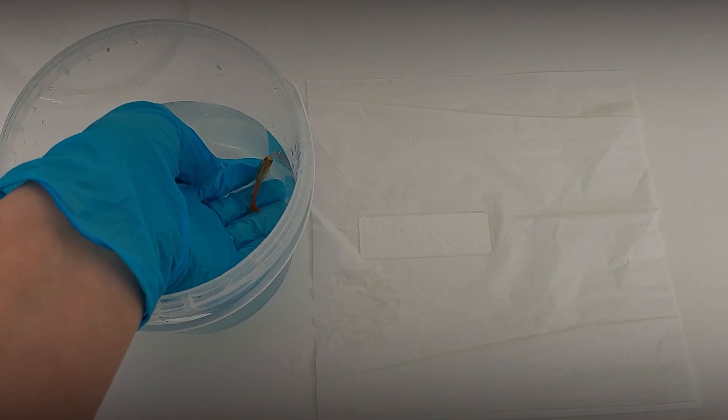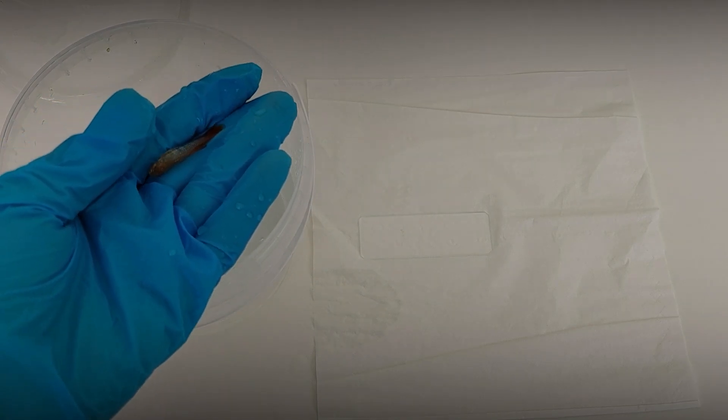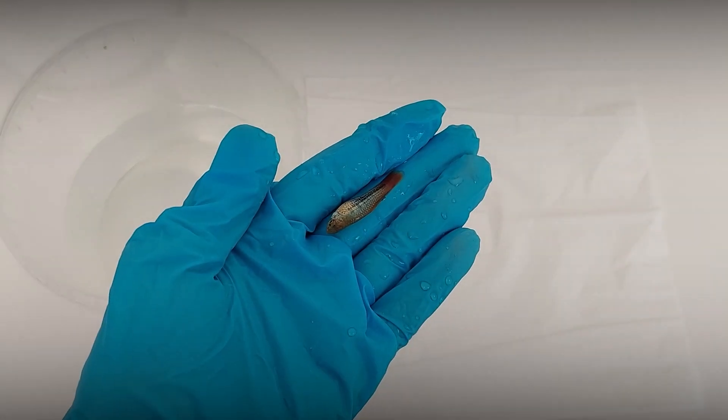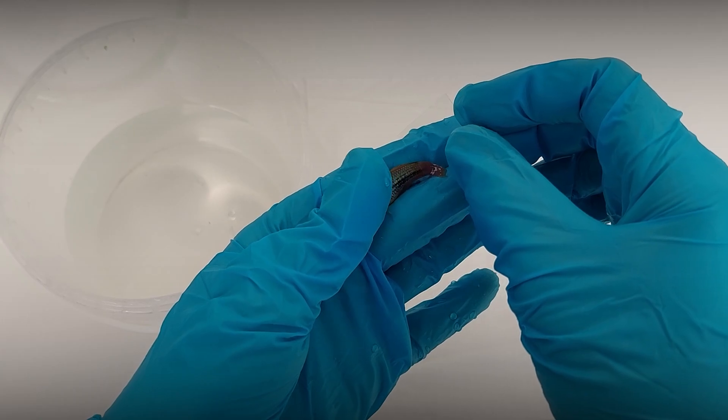Carefully remove the fish from the container. This can also be done with a net. Hold the fish so that it can be scraped from head to tail, depending on whether you are left or right-handed.